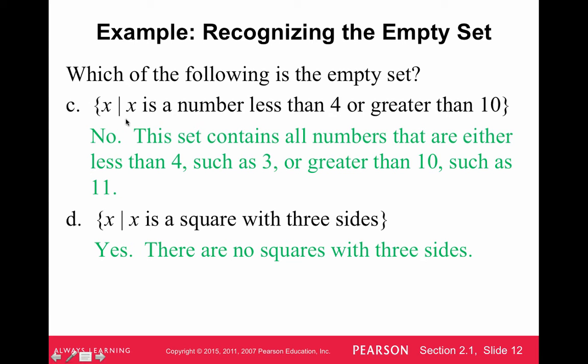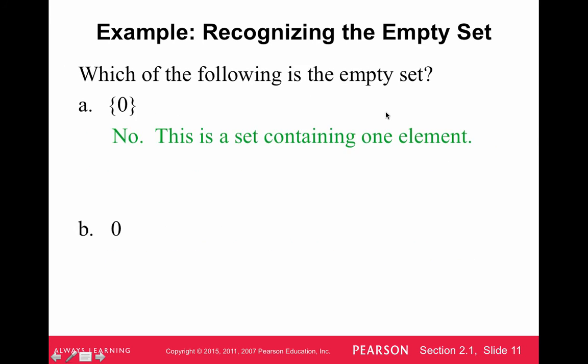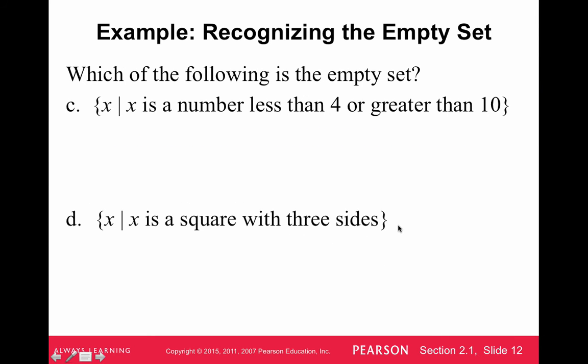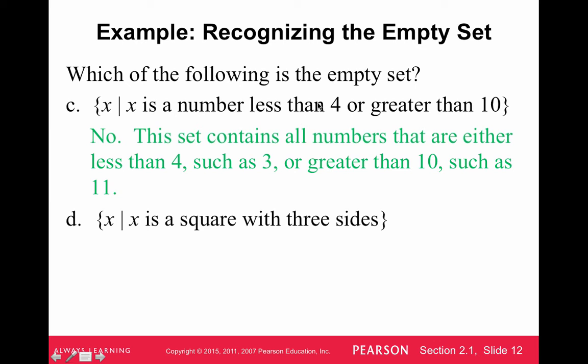Oh, excuse me, excuse me. Letter C. Oh, goodness. I didn't read this correctly. So C is not the empty set because this is numbers less than 4 or greater than 10, which is different than less than 4 and greater than 10. There's no numbers that are less than 4 and greater than 10 at the same time.